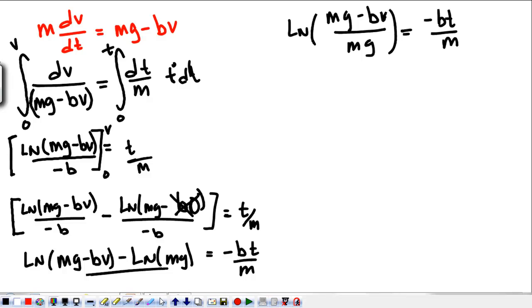And if I want to get rid of that natural log, I have to make that the exponent of each side. So, e to the natural log of mg minus bv over mg is equal to that. What happens is that e and the natural log sort of cancel out. They negate each other. And I get mg minus bv over mg is equal to e of the minus bt over m.